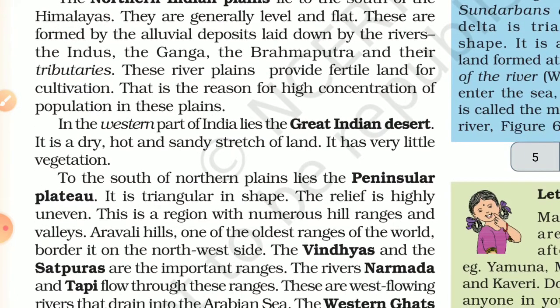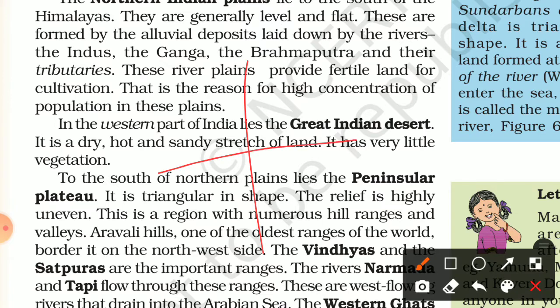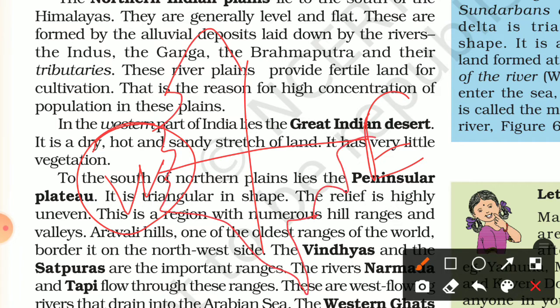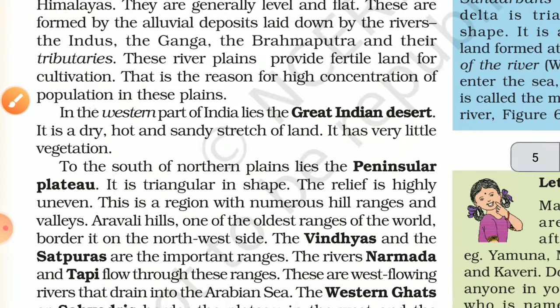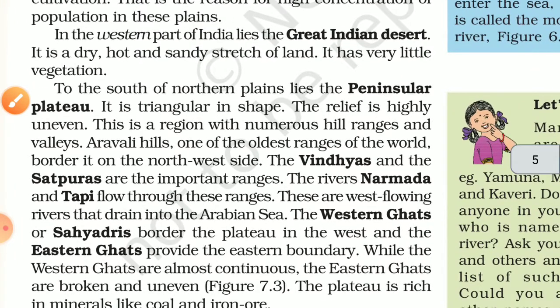In the western part of India lies the Great Indian Desert. Looking at the map, this is the west side — the Great Indian Desert is located in this western part of India.